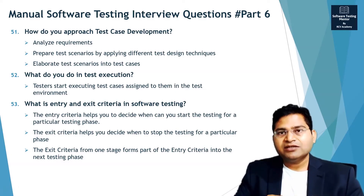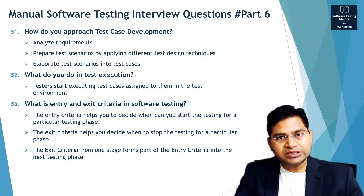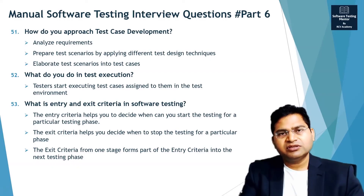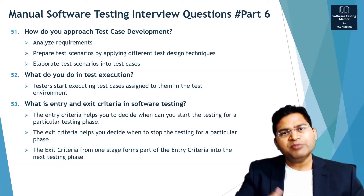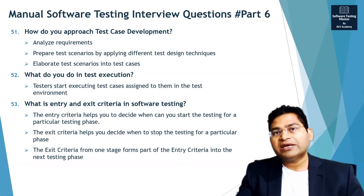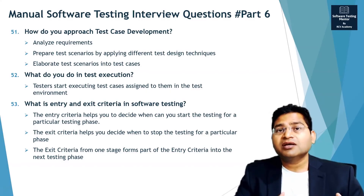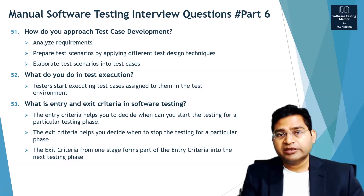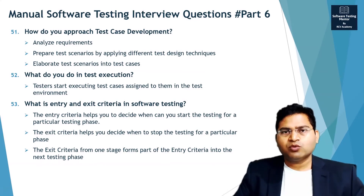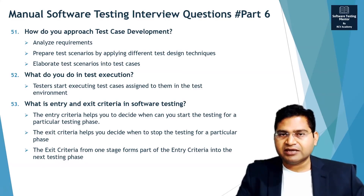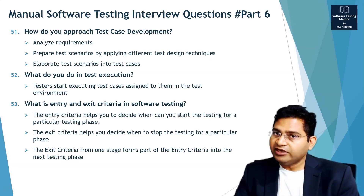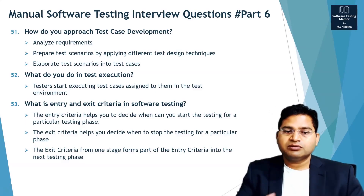The exit criteria from one phase forms the entry criteria of the next phase. For example, you can start integration testing when all unit testing is completed and no major defects are outstanding. You can start system testing when integration testing is completed and all severity one and two defects have been fixed. Similarly, the exit criteria of system testing forms the entry criteria for acceptance testing.